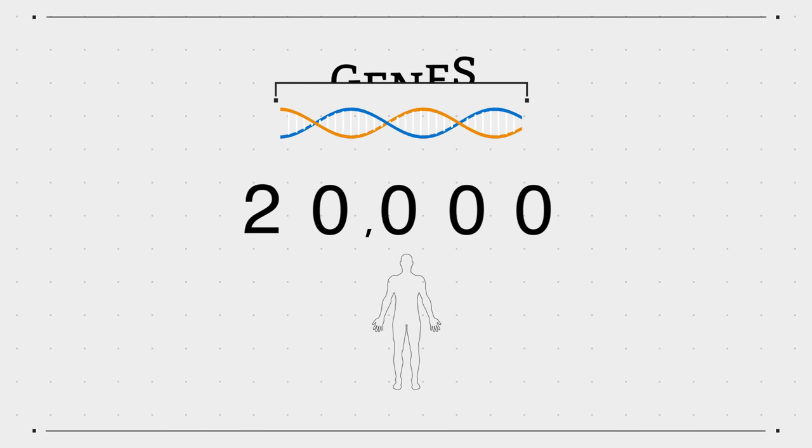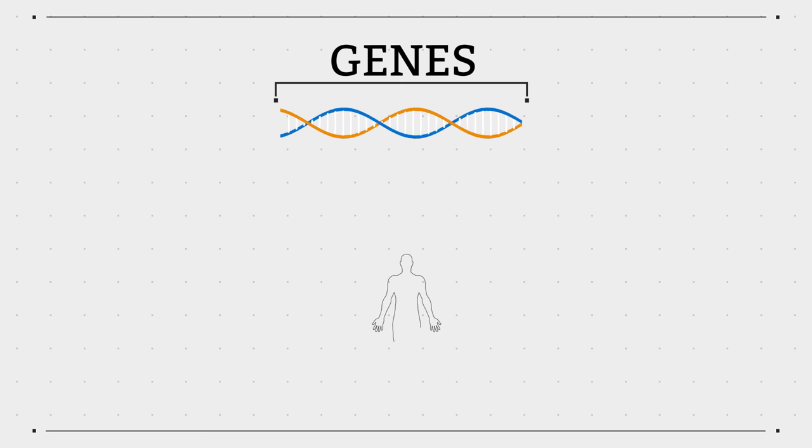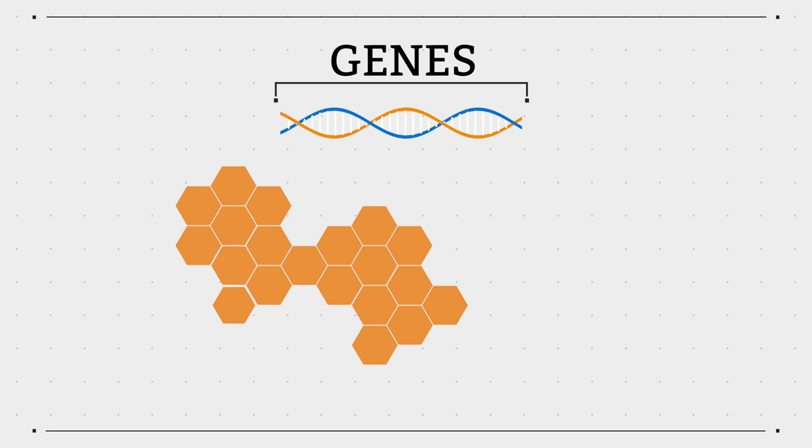Humans have around 20,000 genes, all containing the information needed to build one or more proteins.